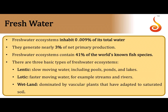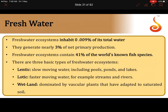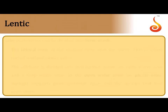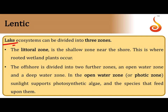Freshwater ecosystems constitute only about 0.009% of all water but generate 3% of net primary production and contain 41% of the world's known fish species. There are three types: lentic ecosystems (slow-moving or stagnant, like lakes), lotic ecosystems (actively flowing, like rivers and streams), and wetlands (completely stagnant, dominated by vascular plants adapted to saturated soil).